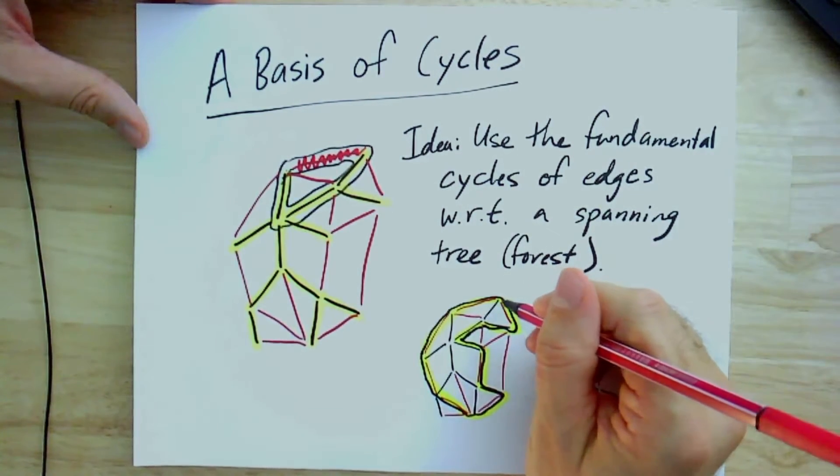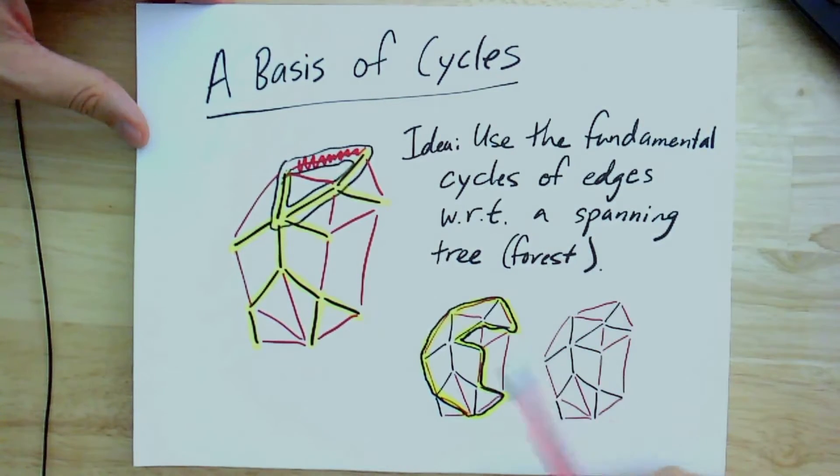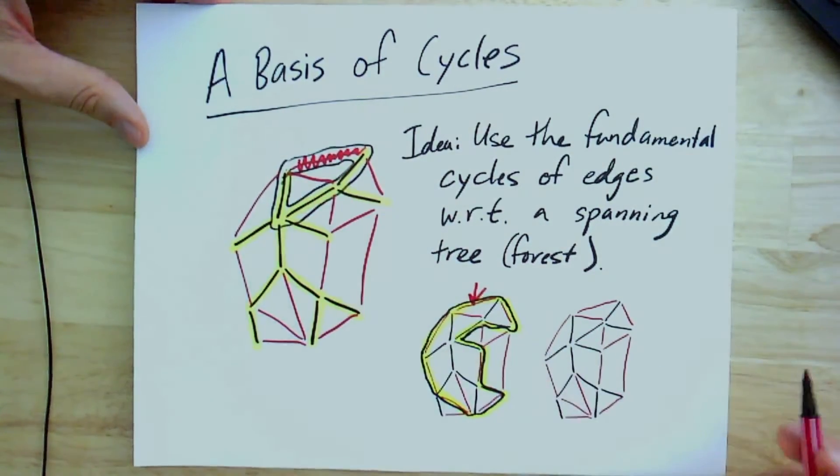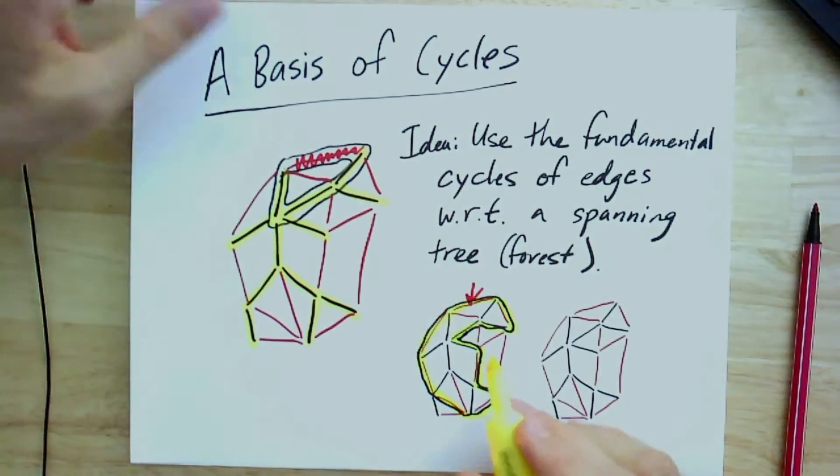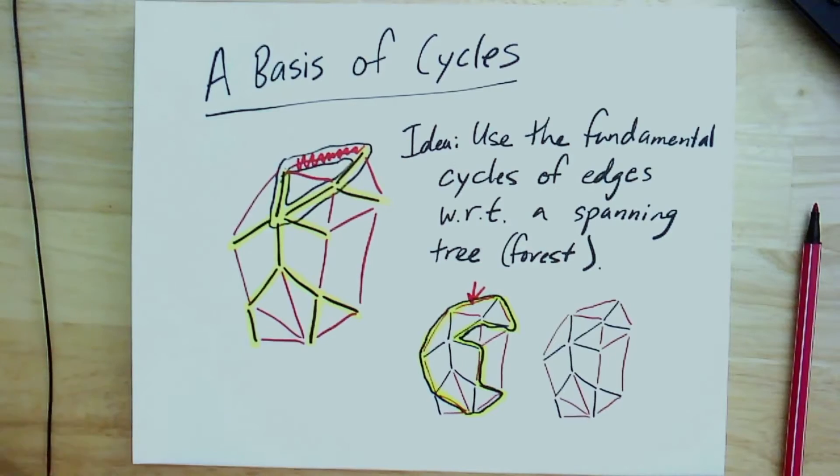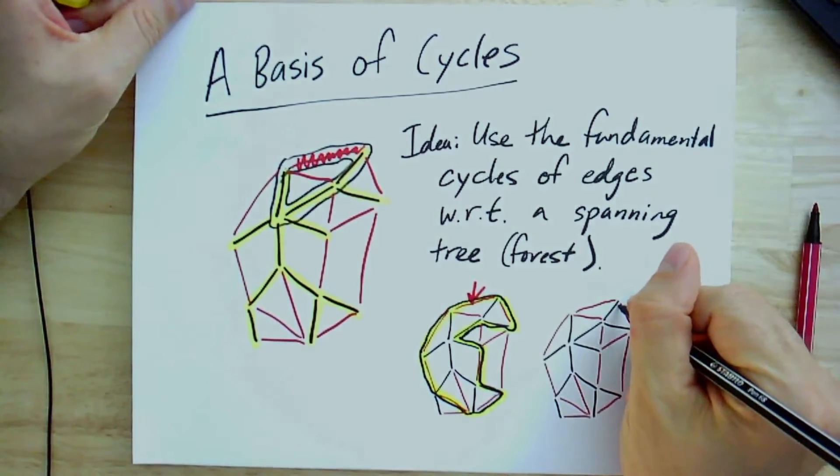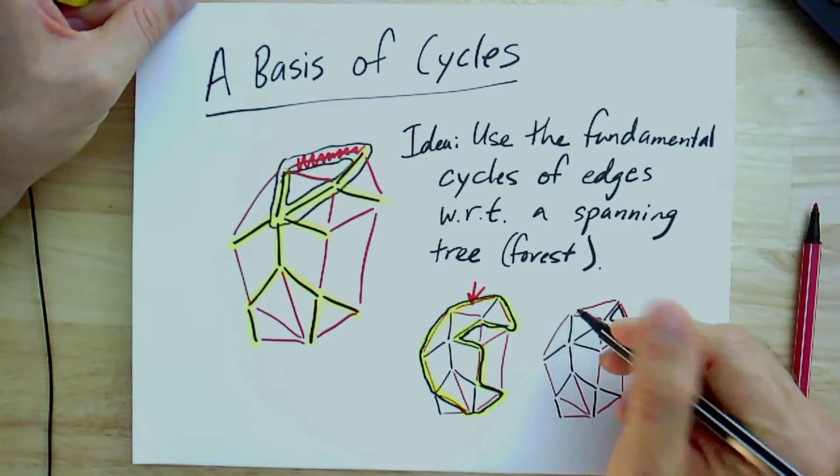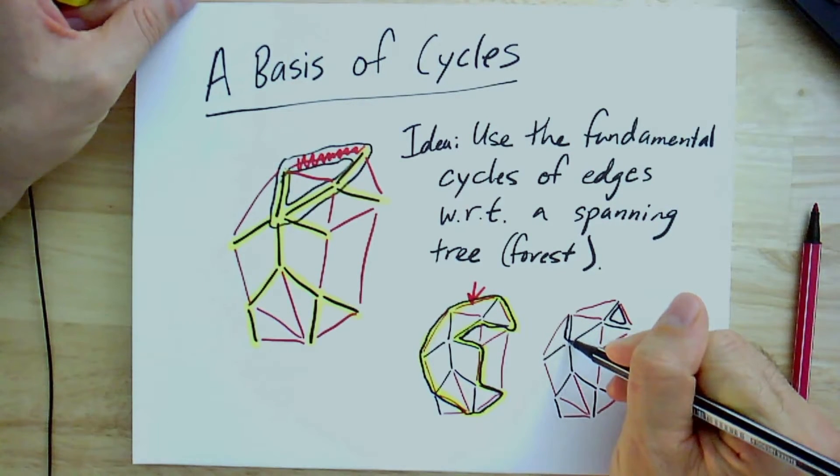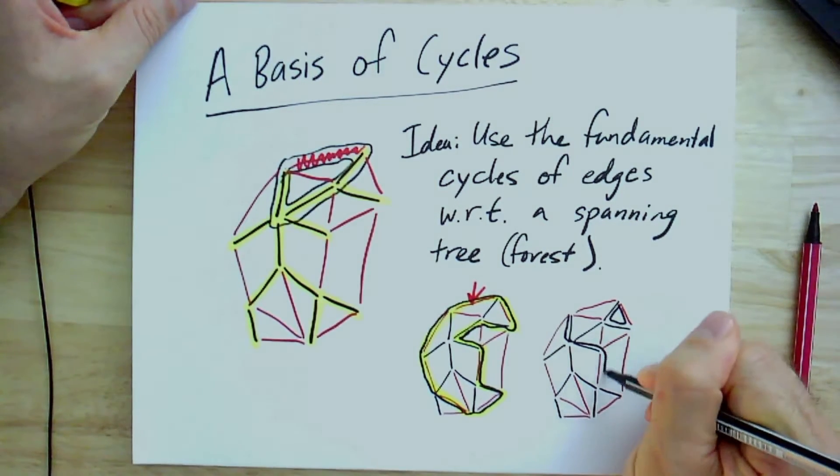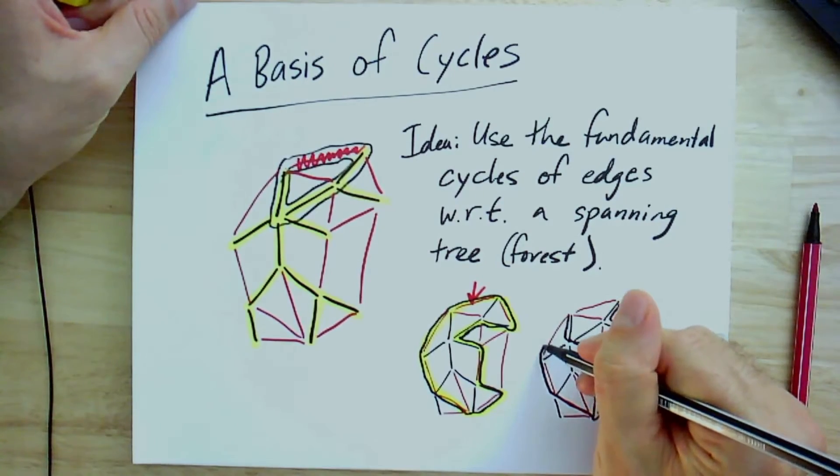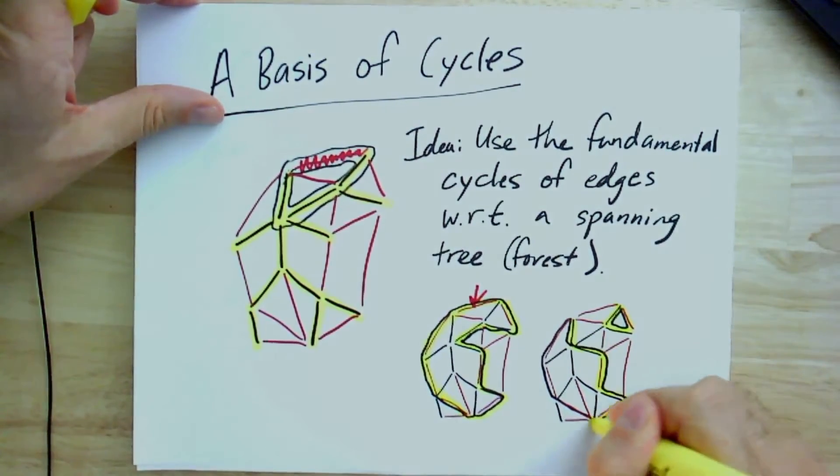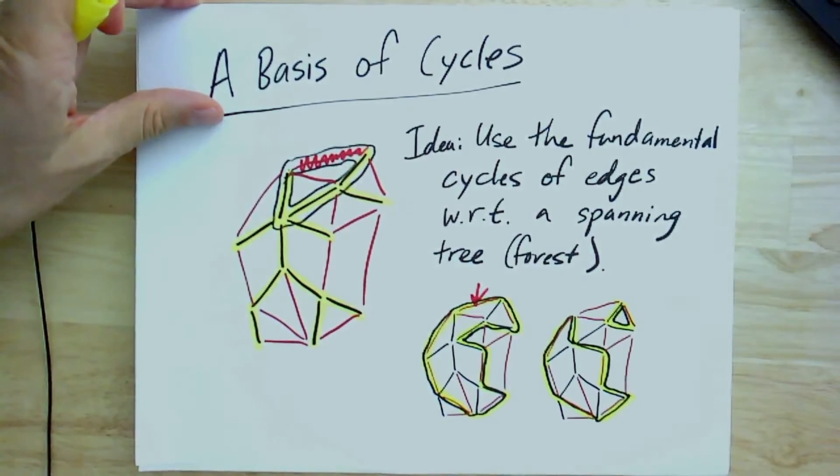If I take any edge that's not in the spanning tree and I take its fundamental cycle, like for instance, let's take this edge right here. I've drawn its fundamental cycle over here. If I added it in, the sum of the cycle I started with plus that fundamental cycle, I would get, well, I think I would get something like this. I'd get this little cycle over here and something over here. Hopefully this comes through in the video. So that is my new cycle.